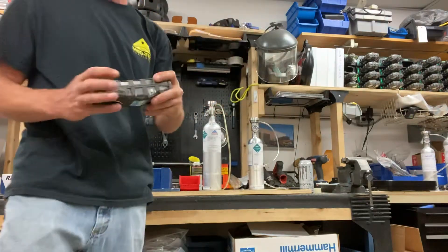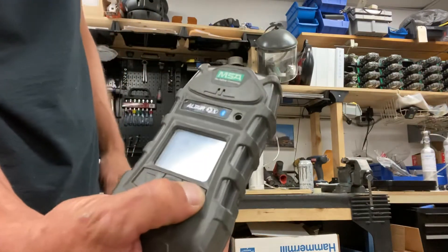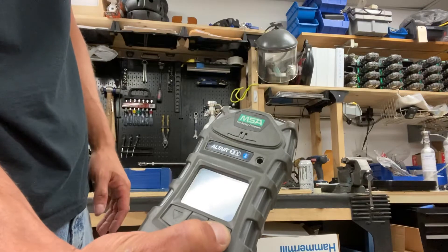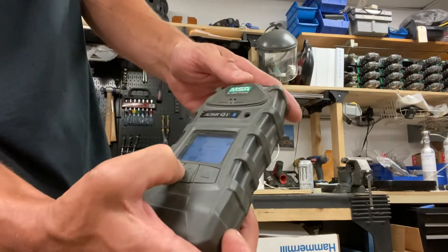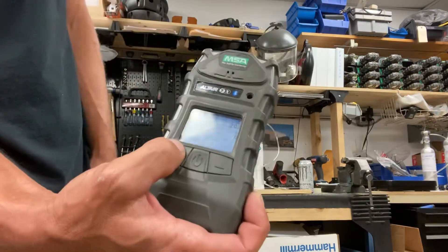So all you're gonna do is hold down the up arrow for about three to four seconds. It's gonna change, it's gonna ask you if you want to zero calibrate. You're gonna hit yes.